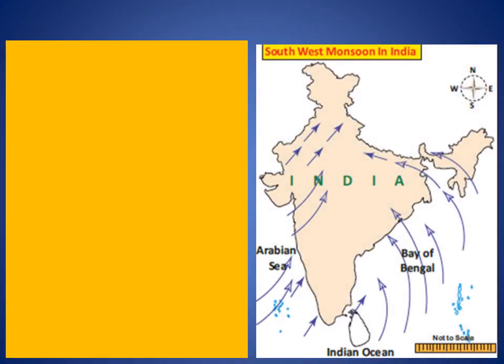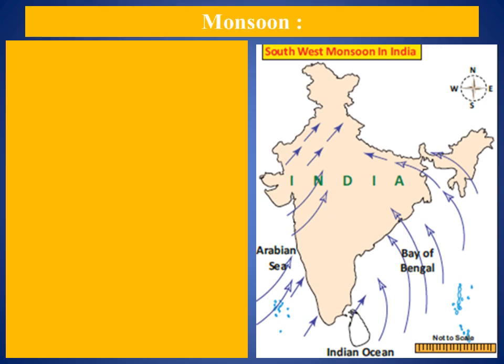Welcome to JC's Matriculation School, Thalavadi. In this social class, I will explain Geography Lesson Number Two: Climate and Natural Vegetation of India, continue part. In the past class, I explained the factors affecting the climate: latitude, altitude, distance from the sea, monsoon winds, and relief.